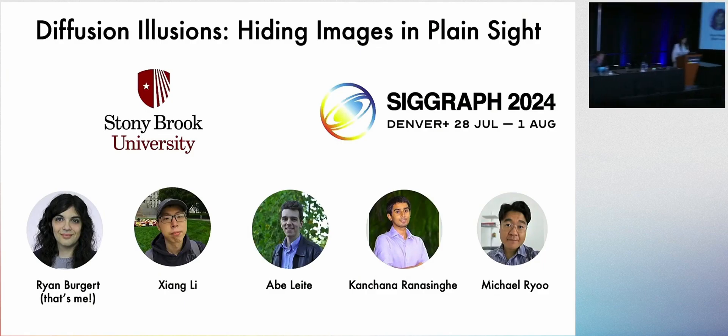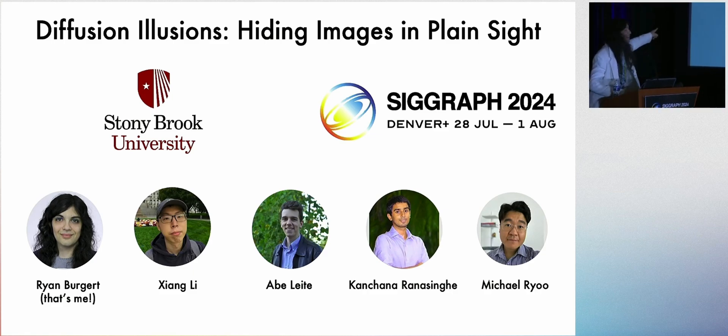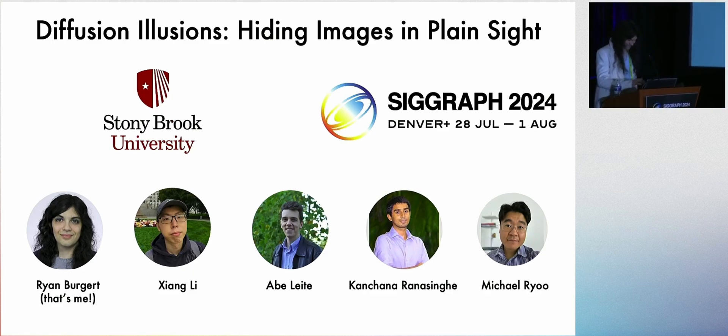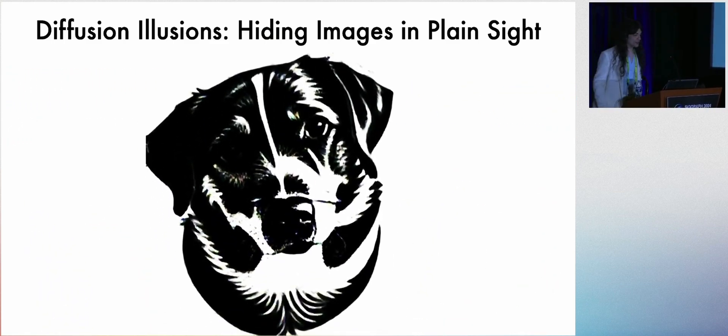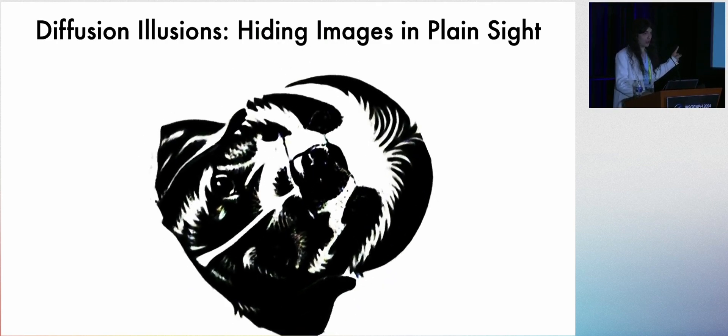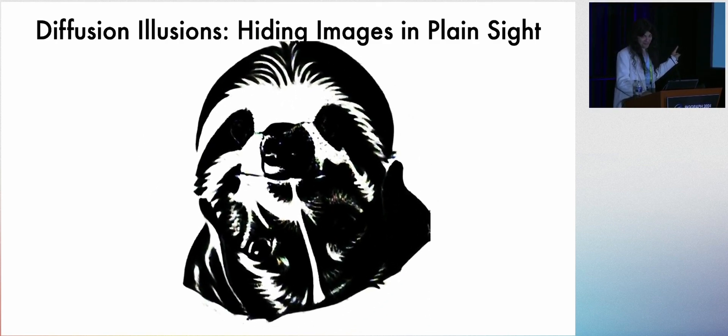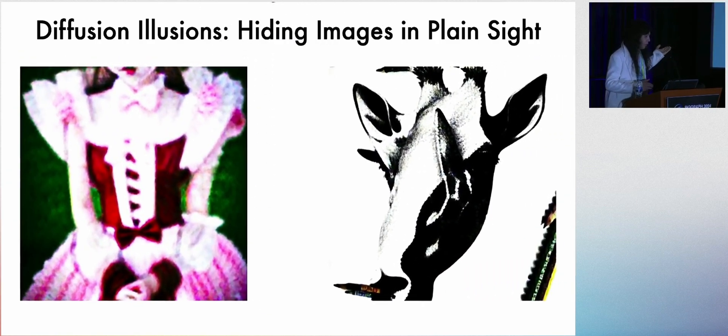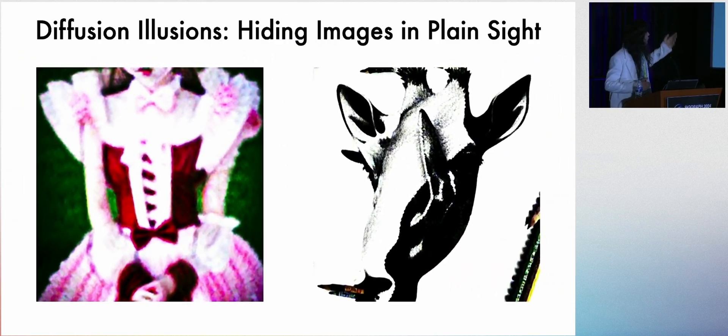Hey, everyone. So I'm going to present our project, Diffusion Illusions. I'm a student from Stony Brook. And that picture on the left, that's me. So you might see a picture of a dog here. But what you might not have known is that this dog is secretly a sloth, this girl holding her hands together on the left, or this giraffe on the right.